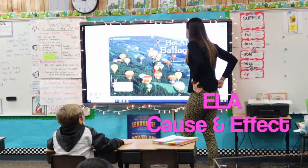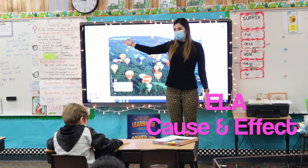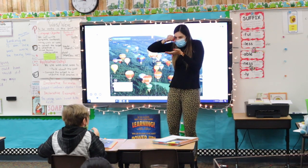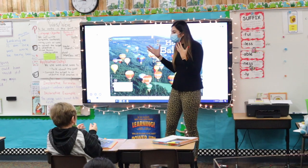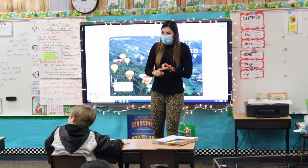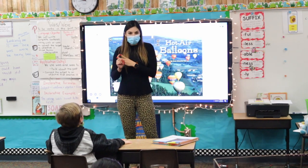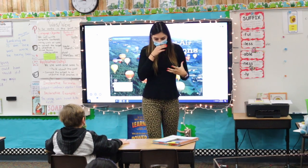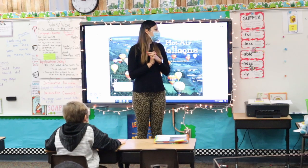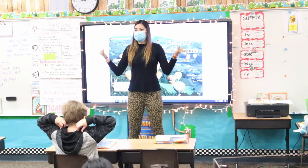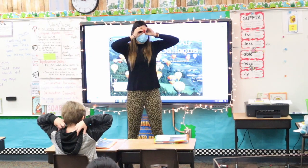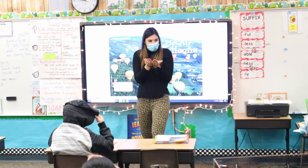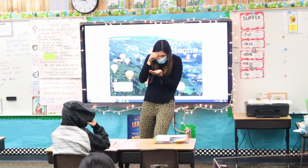We have hot air balloons. We already discovered that this is expository text. So that means we're going to see real pictures. We're going to see some graphs that show some data, some pictures, captions, all that good stuff. Our objective today is: today I will identify the cause and effect in an expository text.